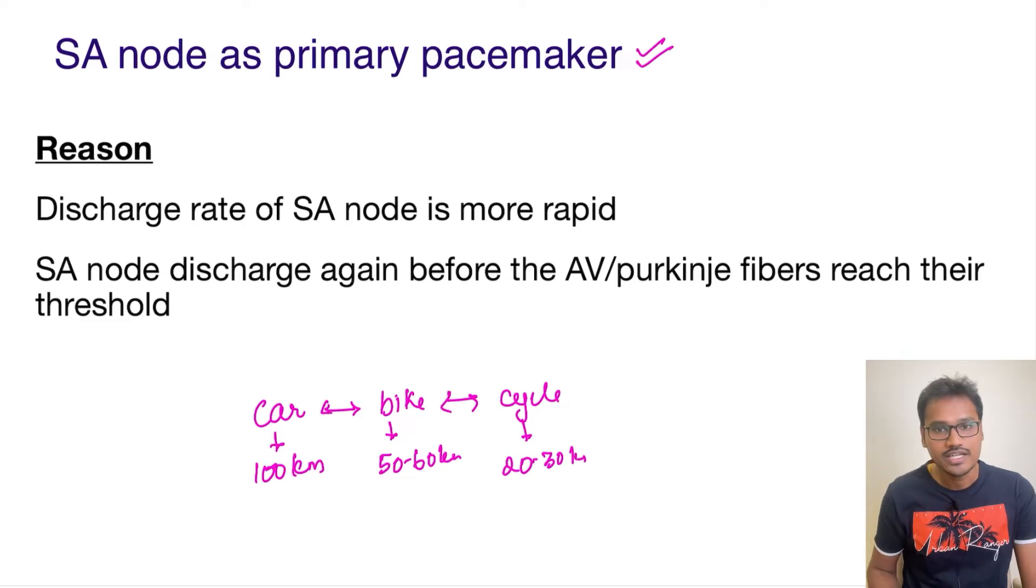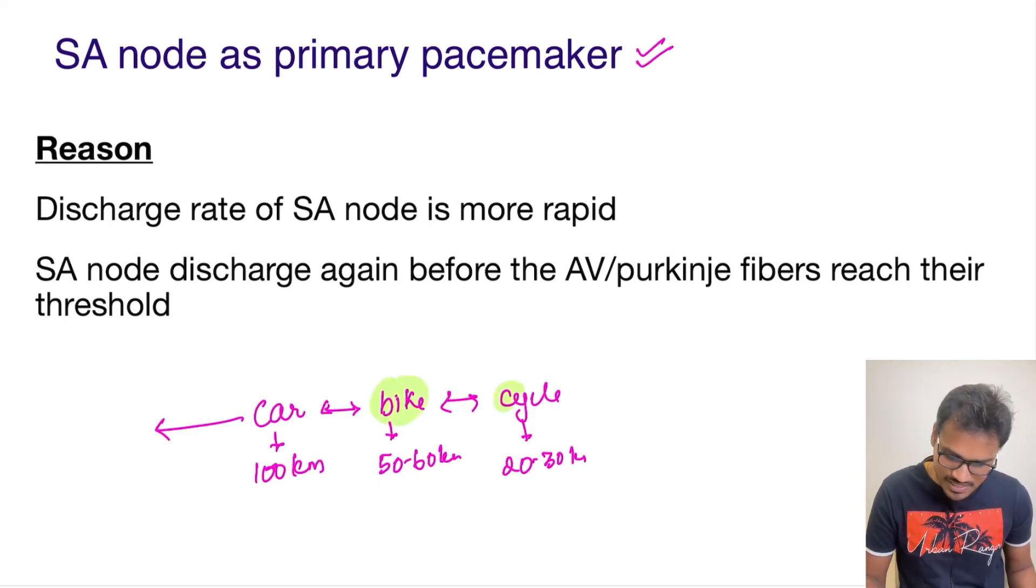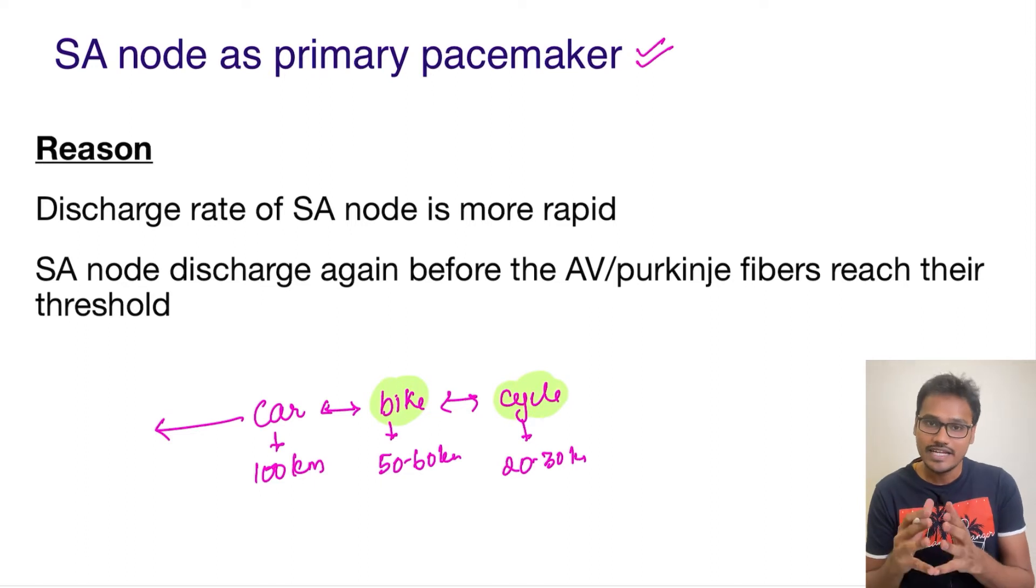Now all of them are attached together. Suppose the car is the driving force—what will happen? What will be the speed of all of them? All their speeds will be at 100 kilometers per hour. Even though the inherent speed of the bike and the cycle is slower and they have their intrinsic speeds, still they are overdriven by the car because now the car is pulling them at a very high rate.